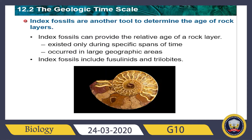Index fossils are fossils of organisms that existed only during specific spans of time over large geographic areas. The best index fossils are common, easy to identify, found widely around the world, and only existed for a relatively brief time. In order to be helpful as an index fossil, it should be common, easily identifiable, found widely around the world, and should have existed for only a relatively brief time.